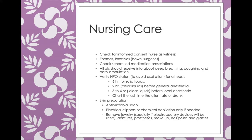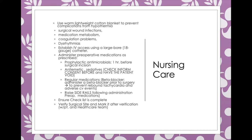Teach the patient about deep breathing, coughing, and early ambulation after surgery. Educate them on how to use the incentive spirometer, which prevents atelectasis — collapsed alveoli. Establish IV access with an 18-gauge catheter, because that gauge is needed to administer blood in an emergency, as blood is thick.